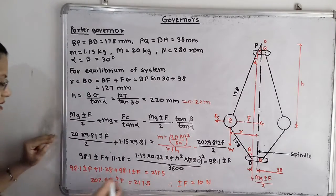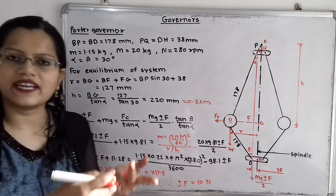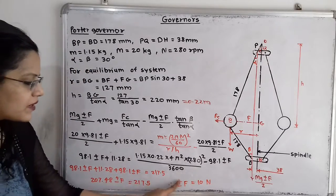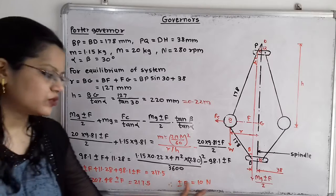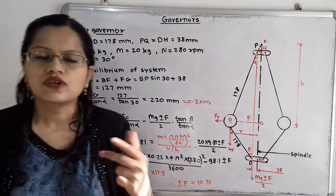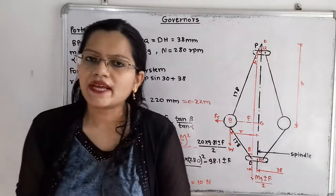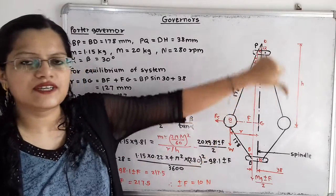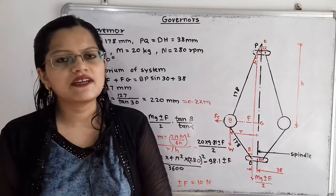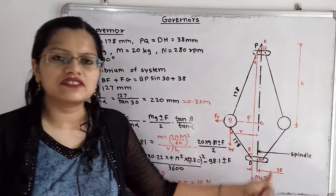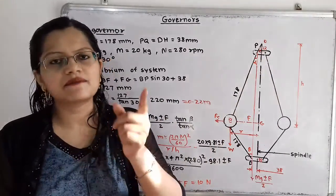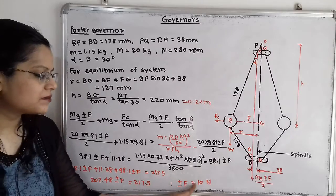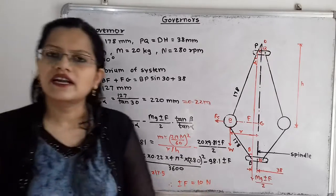Solving the equation, the computed centrifugal term gives approximately 207.5. Therefore, the frictional force F equals 10 Newton. The plus and minus signs reflect both directions: when speed increases, the sleeve moves upward and friction acts downward; when speed decreases, the sleeve moves downward and friction acts upward. In both cases the magnitude of friction is the same — 10 Newton.